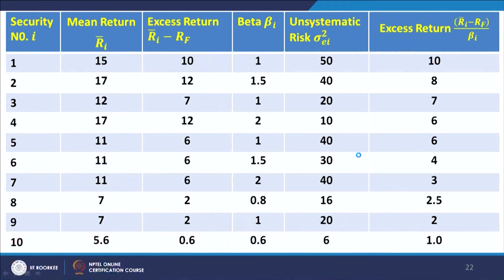Now let us illustrate this with an example. We have 10 securities, and the first step is that we have ranked these securities in terms of (R_i − R_f)/β_i. You can see that (R_i − R_f)/β_i is decreasing as we go down this particular column: 10, 8, 7, 6, 6, 4, 3, 2.5, 2, 1. In other words, we have ranked these securities in the order of decreasing (R_i − R_f)/β_i.